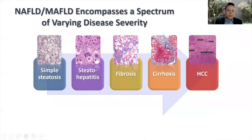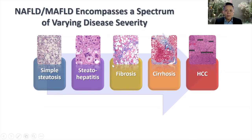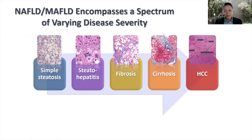From simple steatosis, patients can develop inflammation, or steatohepatitis. Once you have inflammation in the liver, it can induce fibrosis or scar tissue formation. If the inflammation is chronic, scar tissue is deposited on top of each other, and eventually you develop cirrhosis. Since it's a vicious cycle, cirrhosis leads to more inflammation, more fibrosis, and so on, eventually also potentially leading to HCC.